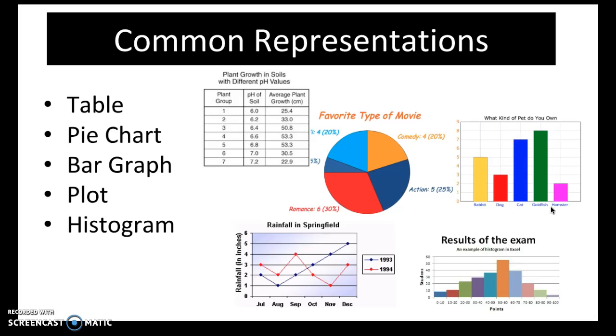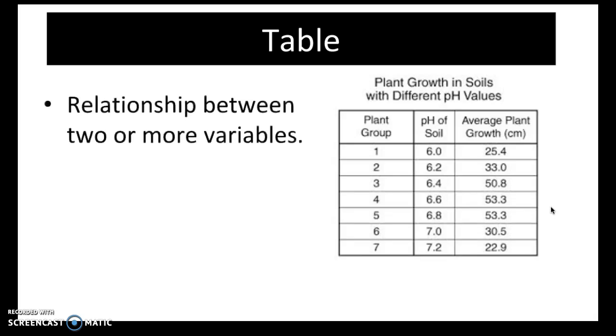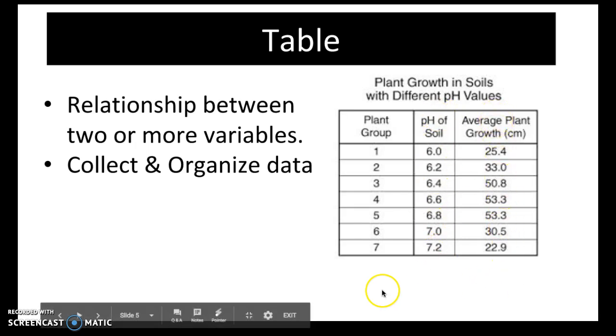In this video we'll look at five common representations that are shown here and we'll start with the table. A data table shows the relationship between two or more variables and it's useful for collecting and organizing data. Most investigations will utilize a data table to collect and organize the data, and the way that is done is headers or labels are used for the columns, which are the part of the tables that go up and down, and the rows.